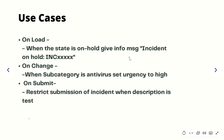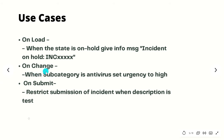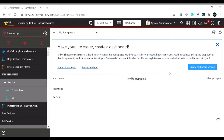Let's look at some use cases. I will cover only a few basic use cases for the sake of understanding. The first use case: we will create an onLoad client script that displays an info message saying the incident is on hold, including the incident number. The second use case: when the subcategory is changed to 'antivirus', we will set the urgency field to 'high'. The third use case: on submit, we will restrict submission of an incident where the description contains the value 'test'.